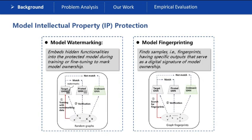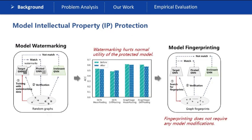Until now, the key idea of protecting IP of machine learning models is to verify the model ownership. There are two kinds of approaches: model watermarking and model fingerprinting. According to recent studies and our empirical experiments, embedding watermarks into GNNs will deteriorate the normal utility. Therefore, in this paper, we utilize fingerprinting, which does not require model modifications, to verify the ownership of graph neural networks.